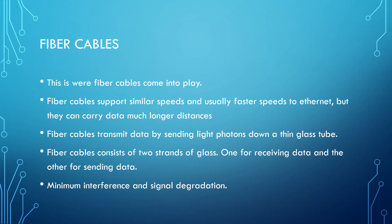That's when fiber cables come into play. Fiber cables support similar or faster speeds than Ethernet cabling, but the main difference is that they support much longer distances — they can carry data much further. Unlike Ethernet cabling, which transmits data over copper wires by carrying electrical signals at certain frequencies, fiber cables send data by transmitting light photons down a thin glass tube. Light can travel much further than an electrical signal can. The fiber cable consists of two strands of glass — one for receiving data and one for transmitting data — and because it's transmitting light inside glass, there is minimum interference and minimal signal degradation, meaning data can be carried at stronger strength over longer distances.